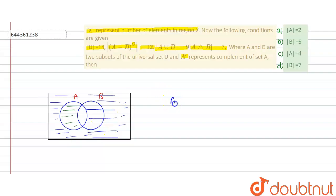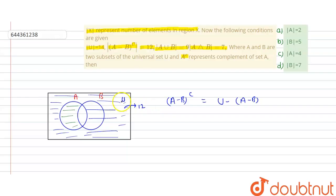So (A minus B) complement equals universal minus (A minus B). The universal value is 14, and the complement (blue region) is given as 12. Therefore, the value of A minus B equals 14 minus 12, which is 2.